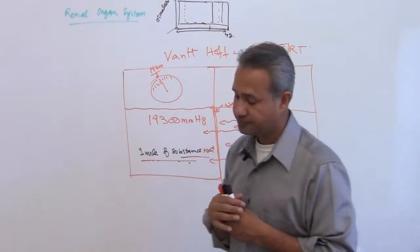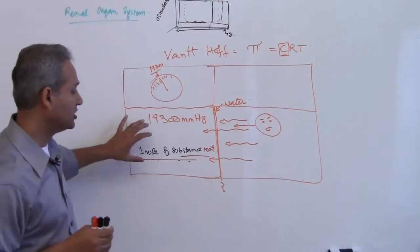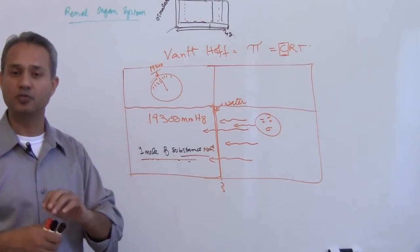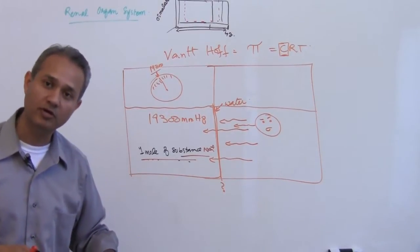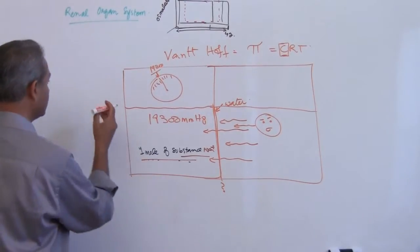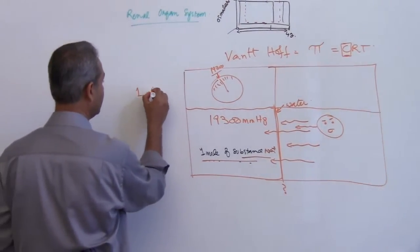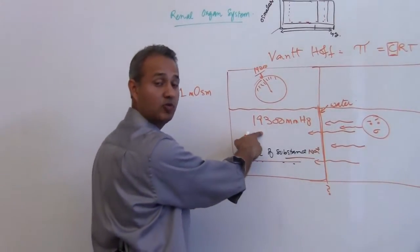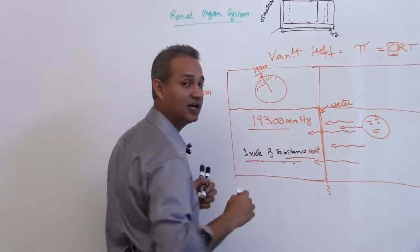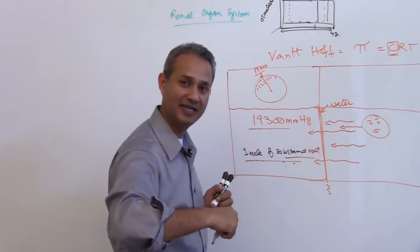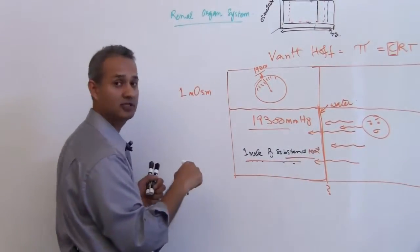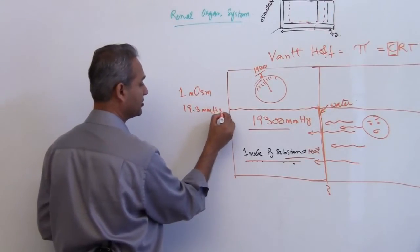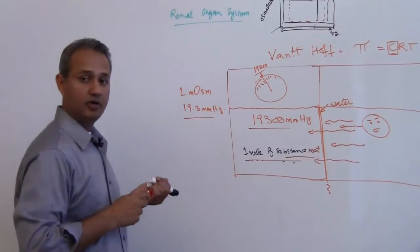In practice one mole is too big in number, so usually we talk about milliosmoles, one thousandth of a mole. If one mole has the osmotic pressure of 19,300 millimeter of mercury, then one milliosmole will be one thousandth of that: 19.3 millimeter of mercury.